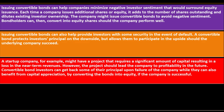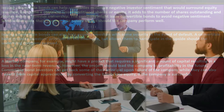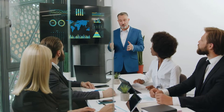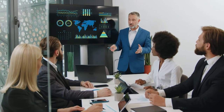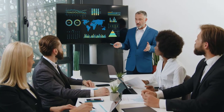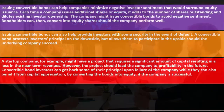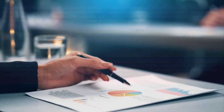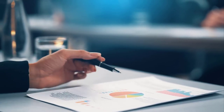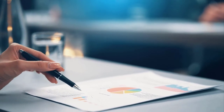A startup company, for example, might have a project that requires a significant amount of capital, resulting in a loss in near-term revenues. However, the project could lead the company to profitability in the future. Convertible bond investors can get back some of their principal upon failure of the company, while they can also benefit from capital appreciation by converting the bonds into equity if the company is successful. If you've got the convertible bond and the company's plan doesn't play out, as long as they can still pay off the bond, you're protected on the downside. And if it does go up, you can convert to stocks and take advantage of the wise investment.